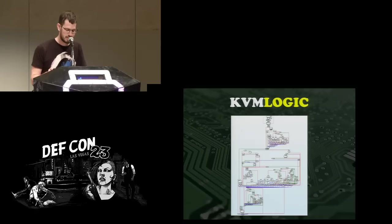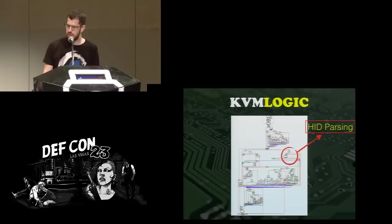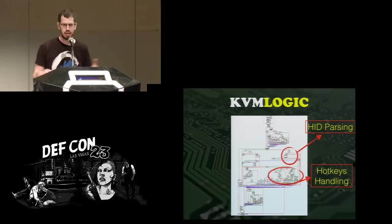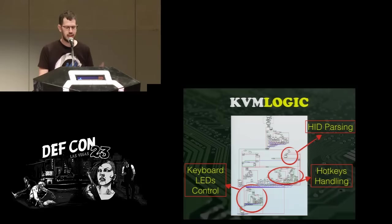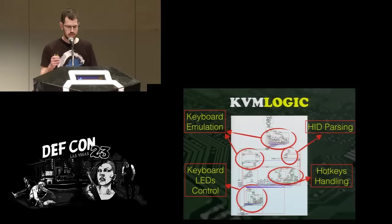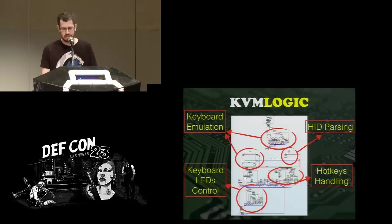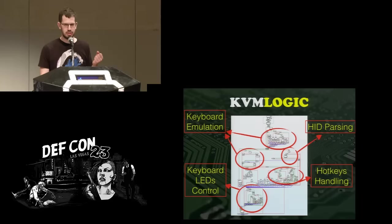Let's take a look at the actual code — this is the visual representation of the main function. This part is responsible for HID parsing — the Human Interface Device, responsible for processing inputs from the keyboard. This part is responsible for hotkey handling. In some KVM operations, it can actually change the LED on the keyboard, so this part handles that. And this is the interesting part: this part is responsible for keyboard emulation. At first we thought we'd just implement the keylogger. But now we know the KVM is actually capable of emulating a keyboard — not only reading keyboard inputs but actually typing its own keystrokes to the computer. We can implement some sort of a rubber ducky, a bad USB-like attack, on each and every port.